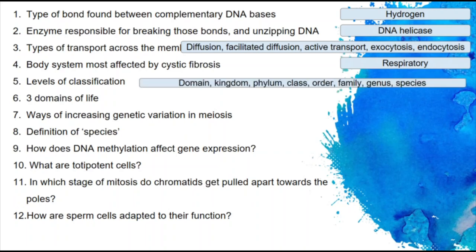Levels of classification: domain, kingdom, phylum, class, order, family, genus, and species. We remember it as 'delicious king prawn curry or fat greasy sausage.' The three domains of life, which we covered last week: archaea, bacteria, and eukarya.